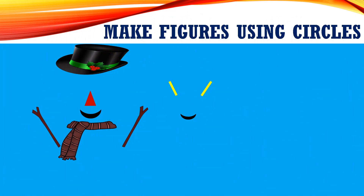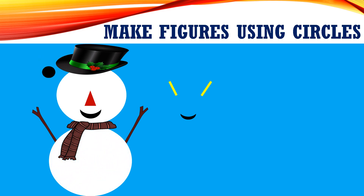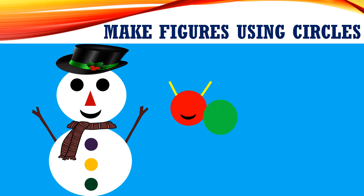Dear children, in this slide we see some scattered tiny shapes, lines and objects. Now let's complete these figures by using only circles. It's a snowman! Moving to the next figure — a little hungry caterpillar.